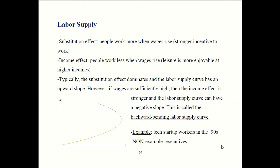There are also many non-examples. A lot of CEOs get paid in the millions, but most of them keep working. Even if they're being paid millions per year, they don't just retire after one year — they keep working more years and earning even more millions. So those folks are still on the positive-sloping, upward-sloping part of the labor supply curve. Some people, even though they're rich, still work more when their wages go up. So the backward-bending case is the exception rather than the rule — most of the time, high wages mean more work.